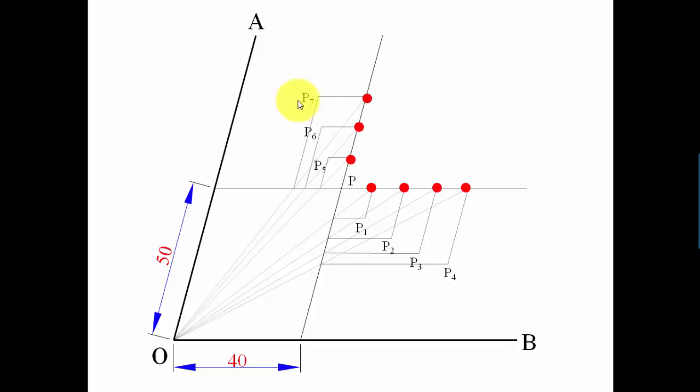When you join all these points in proper sequence with the help of a smooth curve, this red color curve is what you call or what you refer to as a hyperbola. I'll be taking up some more problems based on conic sections and to be very specific on hyperbola. Until then, it's a wrap for today. This is Manas Patnaik signing off. Take care, have a great day, and keep drawing.